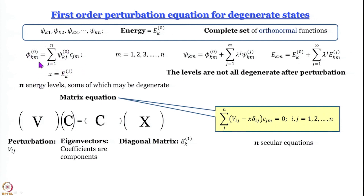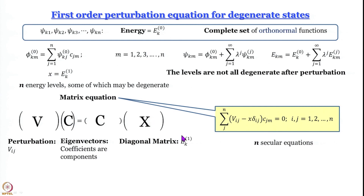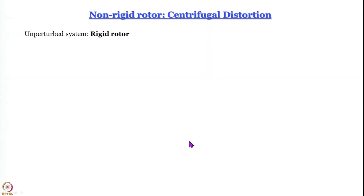So we write the wave function — we start with a linear combination of wave functions, then go to the usual definition of the corrected wave function and corrected energy. We arrive at a matrix equation in which the perturbation V_ij operates on eigenvectors to give the E_k first-order energies as diagonal elements of matrix capital X. The off-diagonal elements are zero (delta_ij), giving a diagonal matrix whose diagonal elements are the first-order corrections to energies.